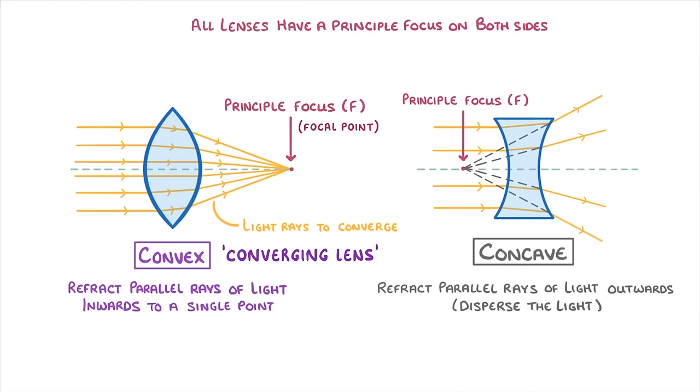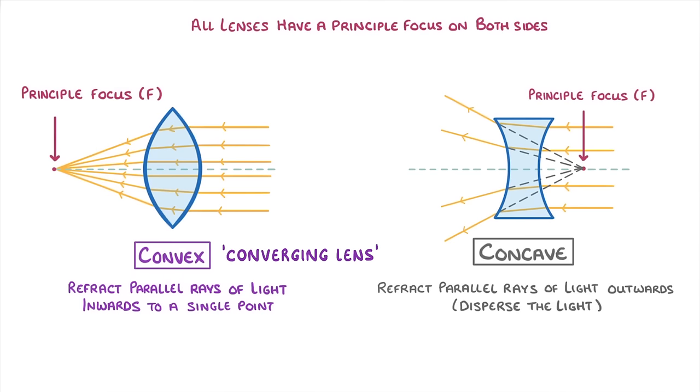Because they have a principal focus on both sides, lenses are basically symmetrical and can work both ways. So if we were to reverse the direction of the light, so that it's travelling from right to left, everything basically flips, and the light focuses on the opposite side of the lens.